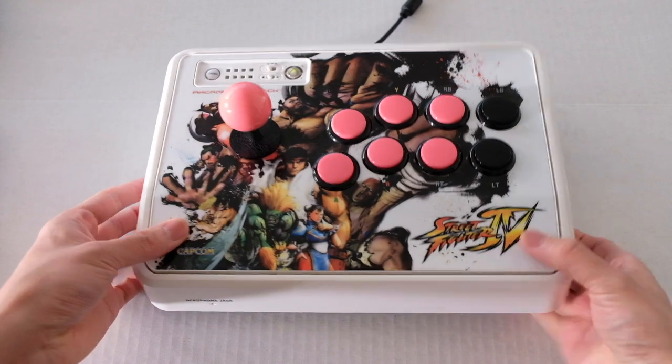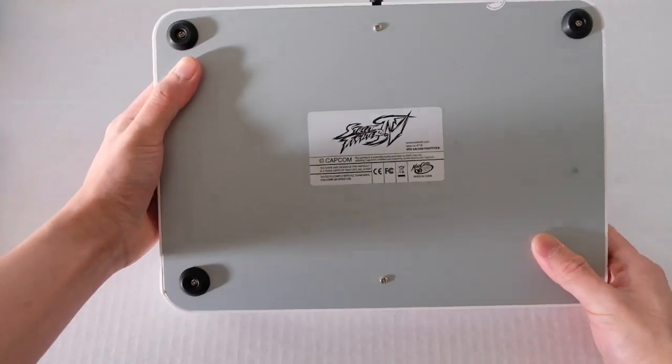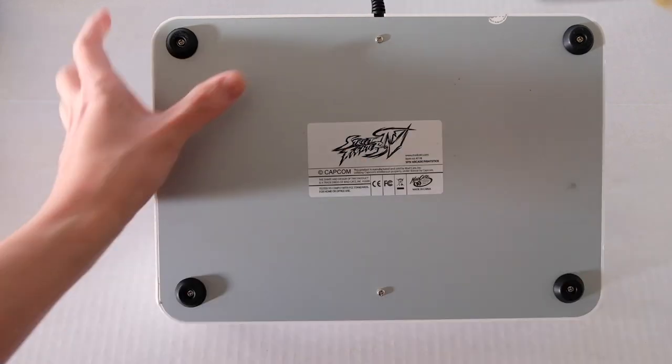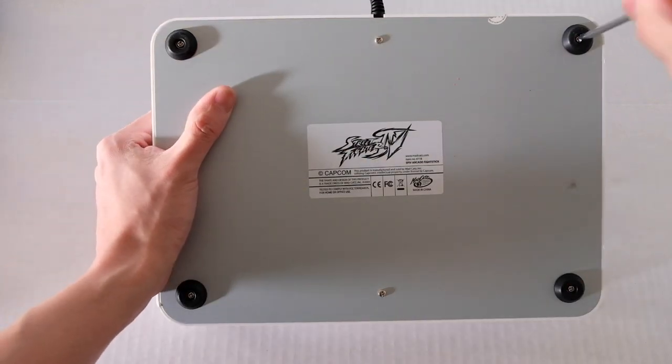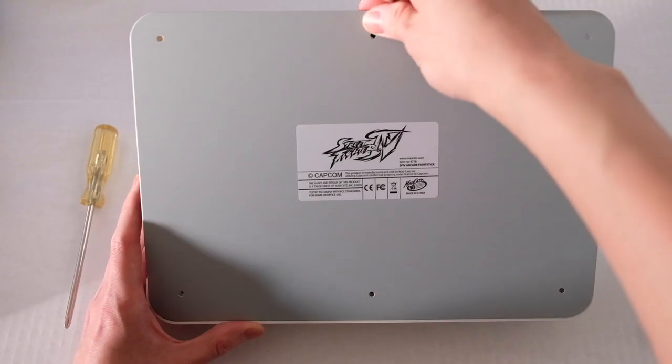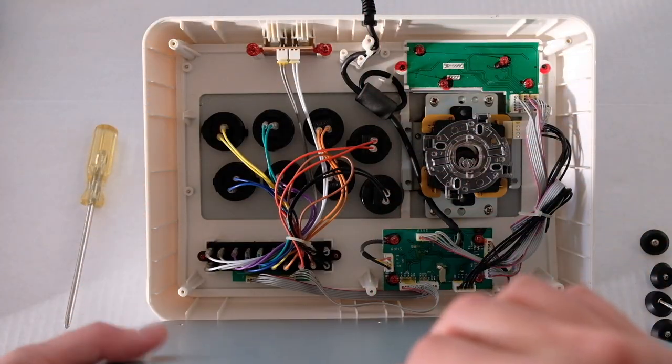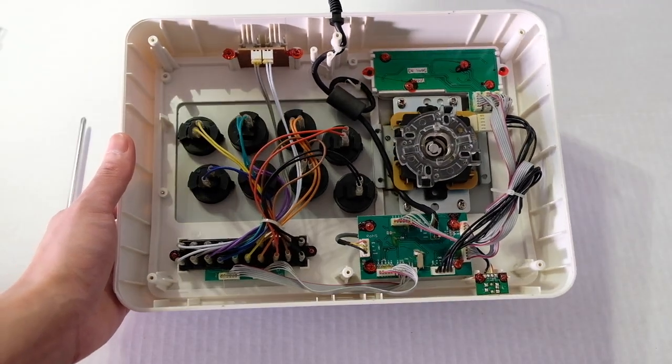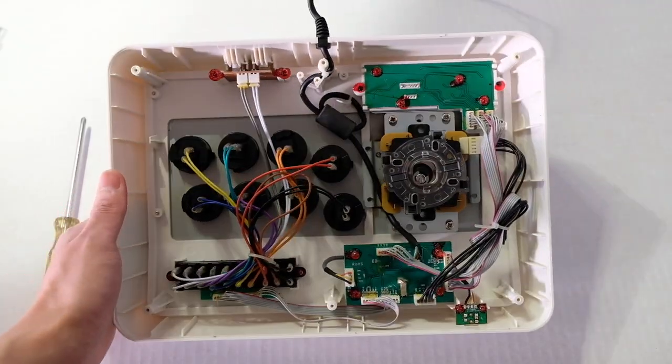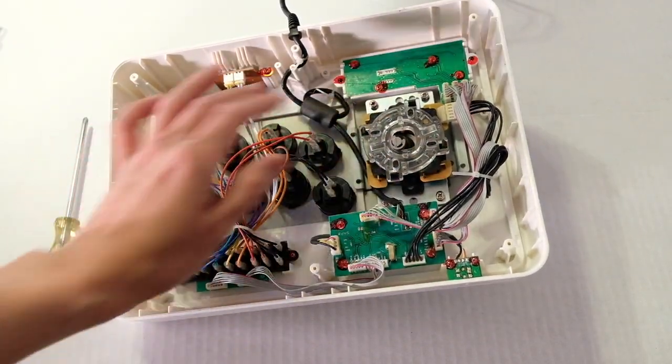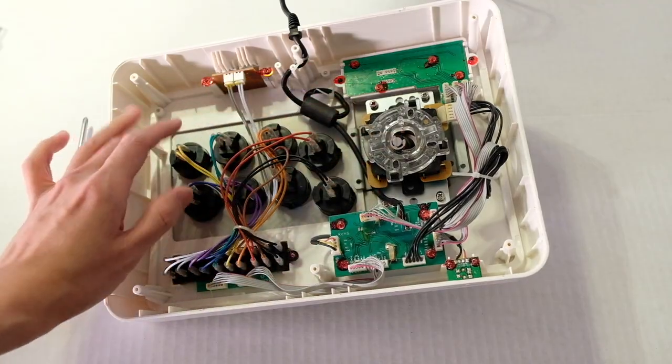First step, we're going to flip over the joystick. We're gonna be using the Phillips screwdriver, let's open this guy up. Put it aside. So this is what it looks like inside of most arcade sticks - you have your eight buttons over here and you have your joystick. Our video is gonna be only focusing on these two parts today.